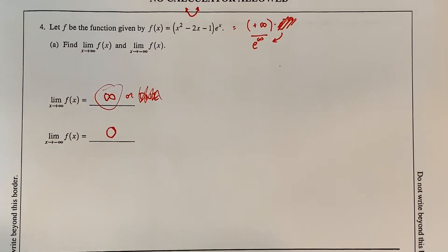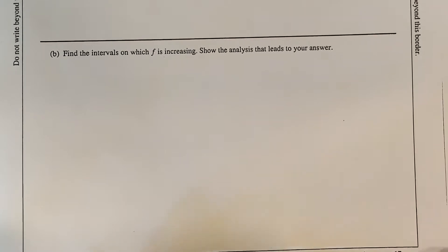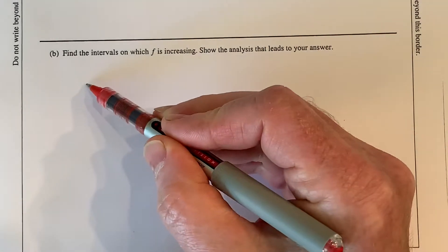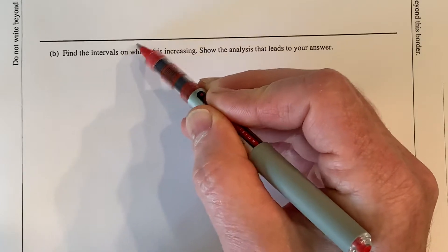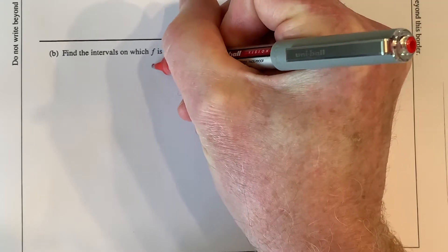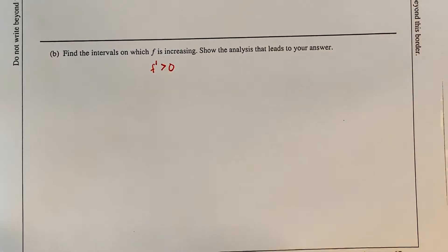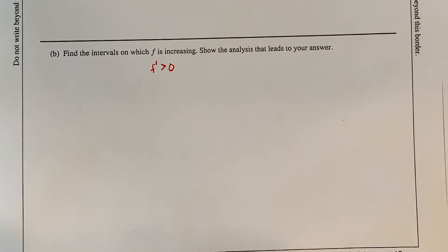Part B says find the intervals on which the function is increasing. Ask yourself: when does a function increase? A function increases when its slopes are positive — when it's moving upward. And what is slope? A slope is a derivative. So I want to know when is the derivative greater than zero. To figure that out, I need to find where the derivative equals zero and then check in between those values.